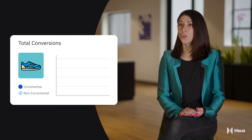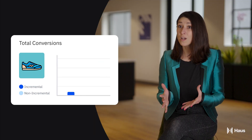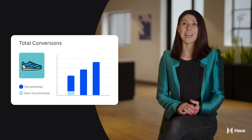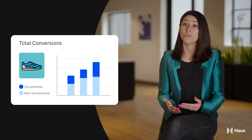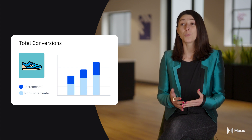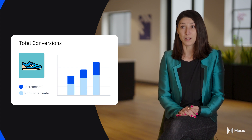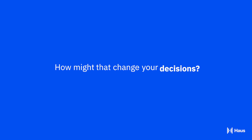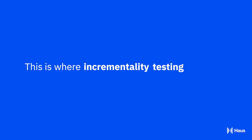So how is the marketer supposed to know which ads cause incremental conversions and which ones just take credit for a conversion that would have happened anyway? How might that change your decisions, your budget, and your business? This is where incrementality testing comes in.